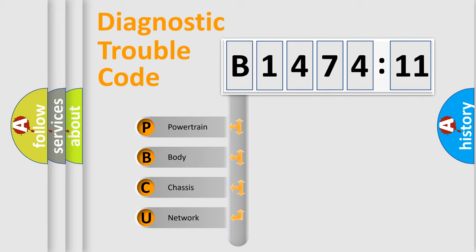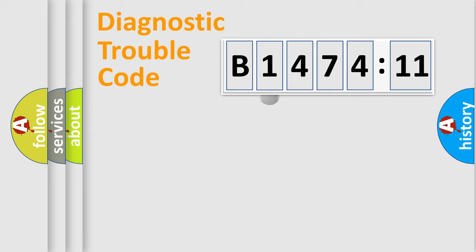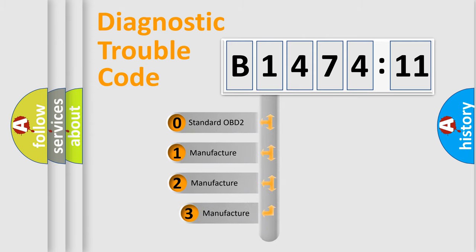We divide the electric system of automobile into the four basic units: Powertrain, Body, Chassis, Network. This distribution is defined in the first character code.